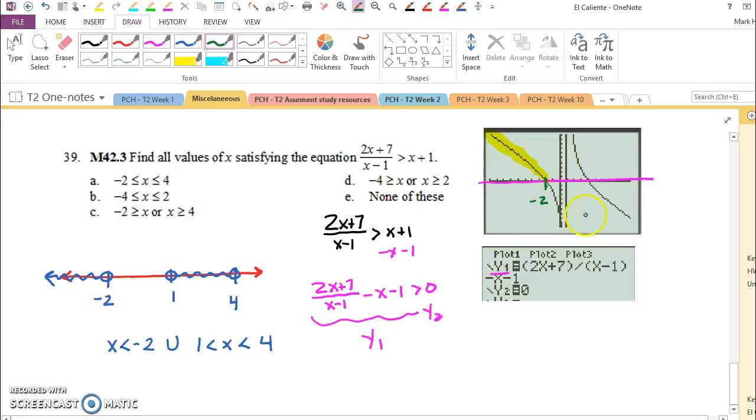And then there's an asymptote at x equals 1. And you should have known that anyway, because only x equals 1 makes this denominator 0.